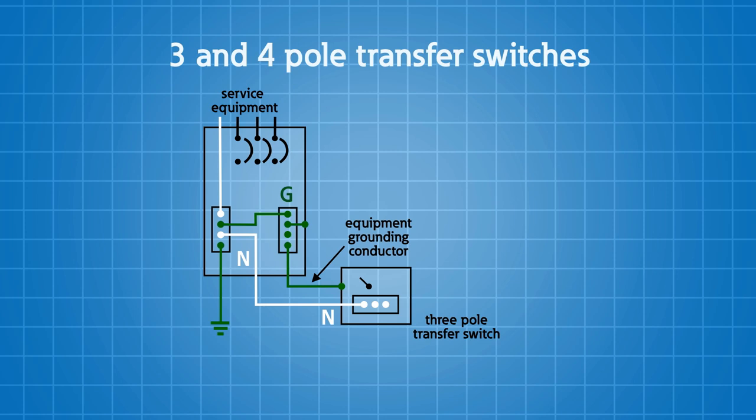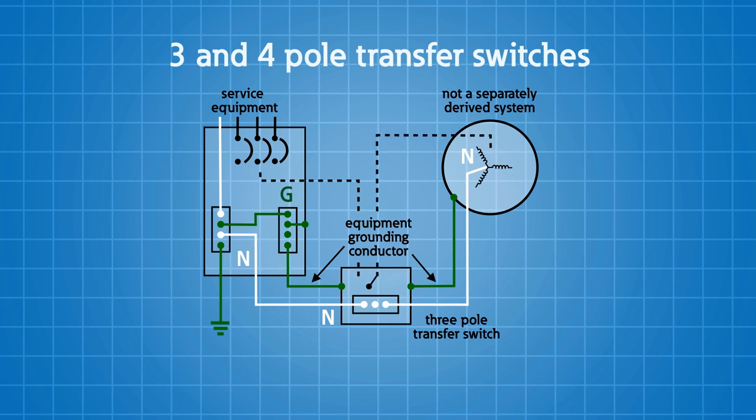You'll have a feeder come off of your panel board and feed the transfer switch. On the other side of that transfer switch, we have a generator. The generator will be connected directly to the transfer switch through some overcurrent protective devices, and then your transfer switch is going to supply loads.